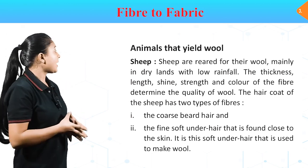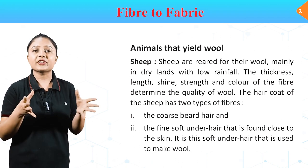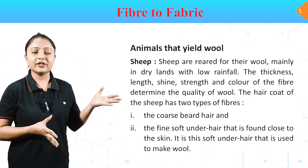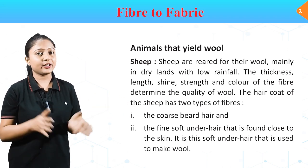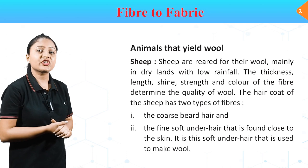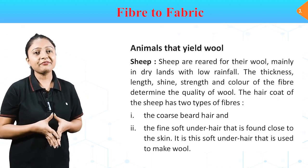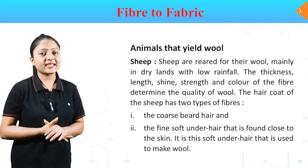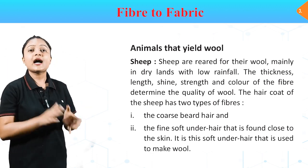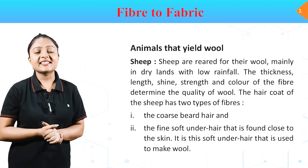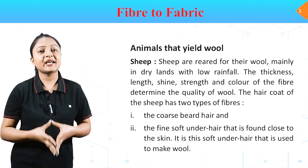Animals that yield wool — अब हमें किस-किस animal से wool मिलता है? Sheep are reared for their wool mainly in dry lands with low rainfall. The thickness, length, shine, strength and color of the fiber determine the quality of wool. The hair coat of the sheep has two types of fibers: the coarse beard hair and the fine soft under hair found close to the skin. It is this soft under hair that is used to make wool. किसी भी sheep से एक coarse hair होते हैं और एक soft hair होते हैं जो skin के पास से मिलते हैं.